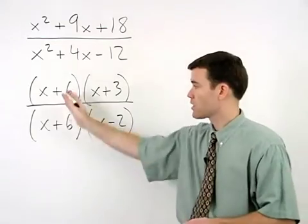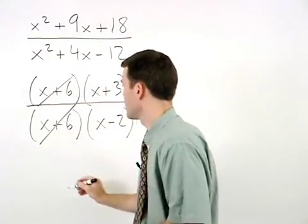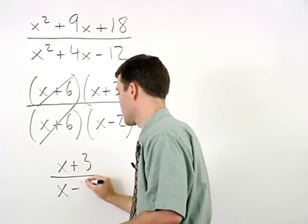Notice that our x plus 6s can now cancel out, and we're left with x plus 3 over x minus 2.